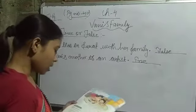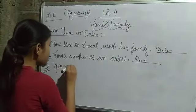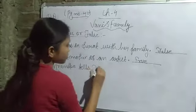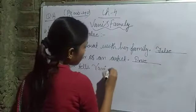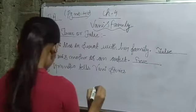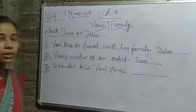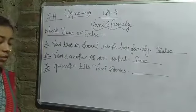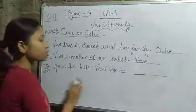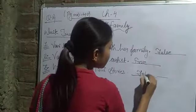Number 3: 'Grandpa tells Vaani stories.' This is the wrong sentence because we already know that Grandma always tells Vaani stories. So this is wrong and we have to write False here.